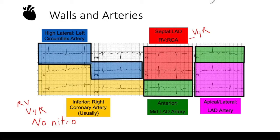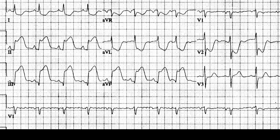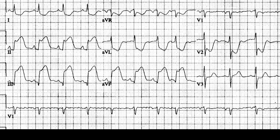Now let's look at some examples. Whenever I'm looking for ischemia, I read the EKG from top to bottom, left to right — always starting with lead 1 and ending with V6. The way we determine an ST depression is to draw a line from the PR interval to the next PR interval to get a baseline. If someone has a one small box deviation of the ST segment below that line, they have an ST depression; above the line is an ST elevation. For ST elevations in the precordial leads, they need two small boxes of elevation; in the limb leads — 1, 2, 3, AVR, AVL, AVF — you just need one small box.